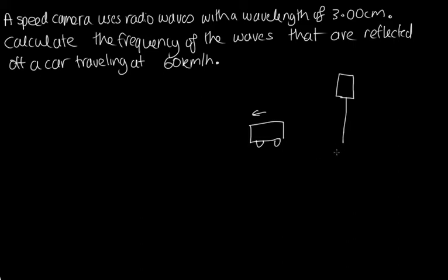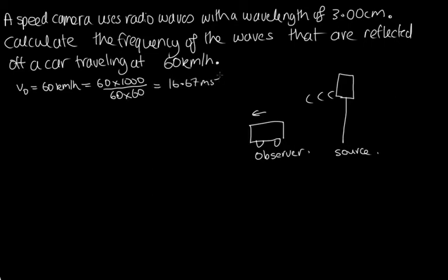First of all we're going to imagine that this speed camera is the source of the waves, which it is. It's producing the radio waves and they're travelling towards this car. Now this is the observer. We can work out that the velocity of the observer is equal to 60 kilometres per hour, which is equal to 60 times 1000 divided by 60 times 60. We'll get it into metres per second. So that's 16.67 metres per second.